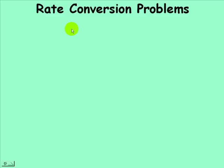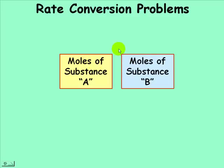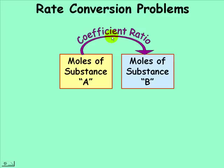In rate conversion problems, we're often asked to go from the rate of production or consumption of one substance to the rate of production or consumption of another. With a chemical equation involving substance A and substance B, in order to go from one to the other, both have to be in moles. To go from moles of A to moles of B, we use the coefficient ratio in the balanced equation — sometimes called the mole bridge.